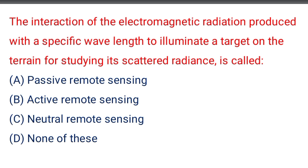Next question: the interaction of electromagnetic radiation produced with a specific wavelength to illuminate a target on the terrain for studying its scattered radiance is called — option A: passive remote sensing, option B: active remote sensing, option C: neutral remote sensing, option D: none of the above. The correct answer is option B: active remote sensing.